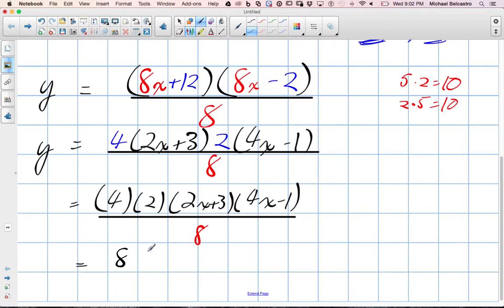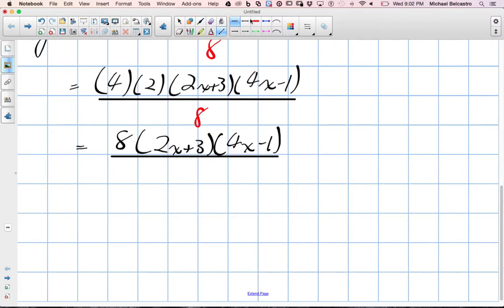So now I have 8 times 2x plus 3, 4x minus 1, and then all of that is divided by 8. Well, what is 8 divided by 8? Technically it becomes 1, but it's the right idea. They cancel out. So they cancel out and we're now in our factored form.